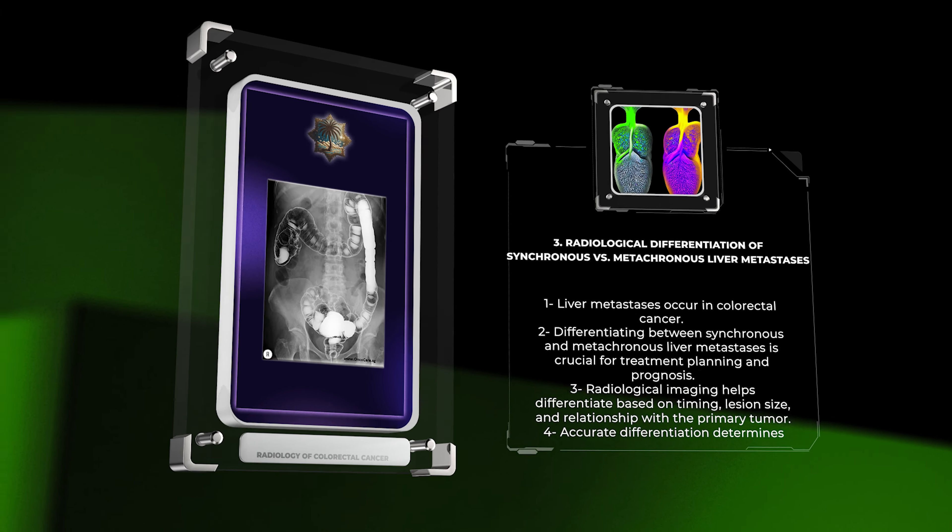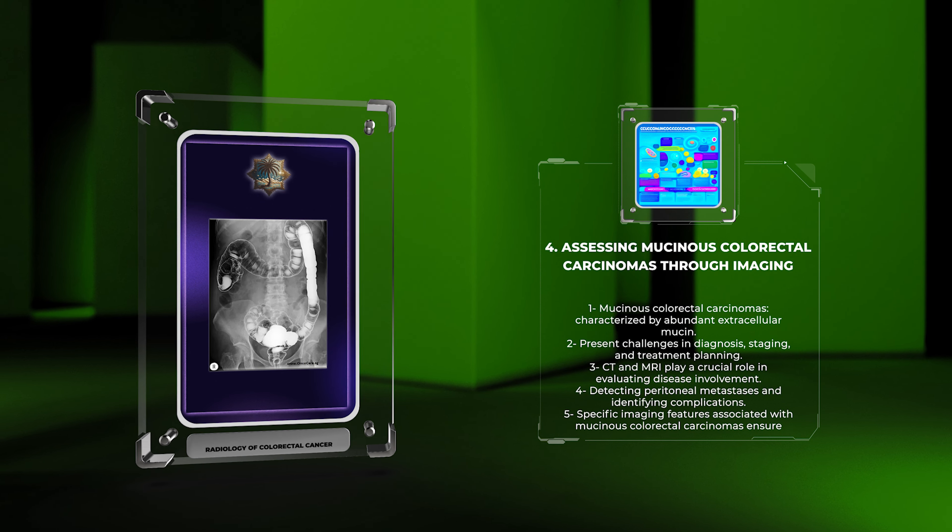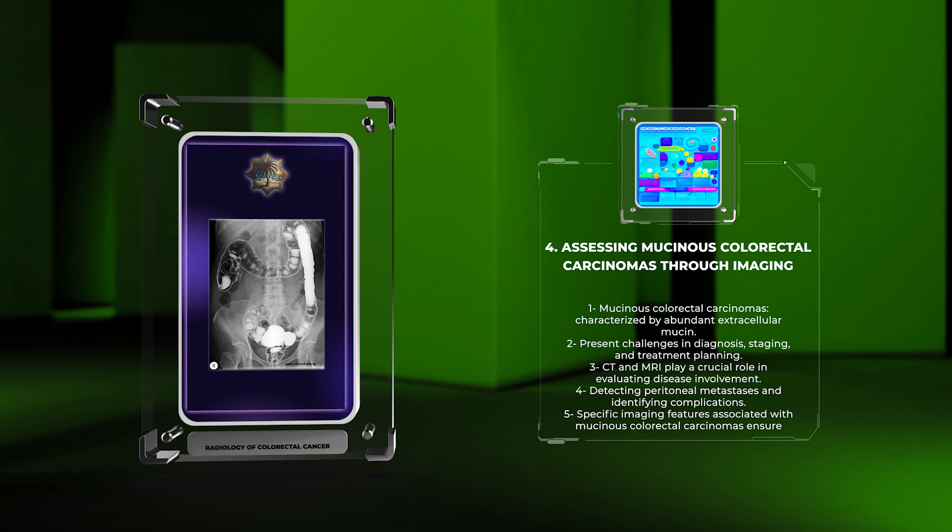Mucinous colorectal carcinomas are a distinct subtype of colorectal cancer characterized by the production of abundant extracellular mucin. These tumors present unique challenges in diagnosis, staging, and treatment planning. Imaging modalities such as CT and MRI play a crucial role in evaluating disease extent, detecting peritoneal metastases, and identifying potential complications. Radiologists must be aware of specific imaging features associated with mucinous colorectal carcinomas to ensure accurate diagnosis and guide appropriate management decisions.